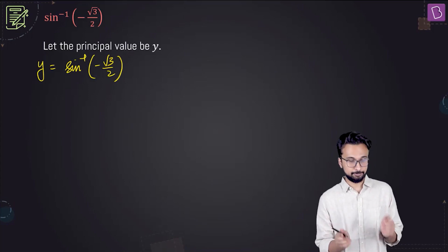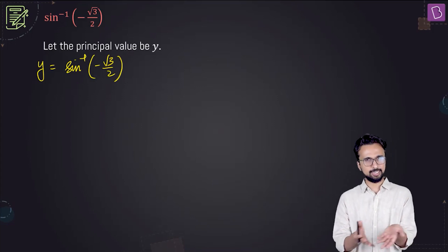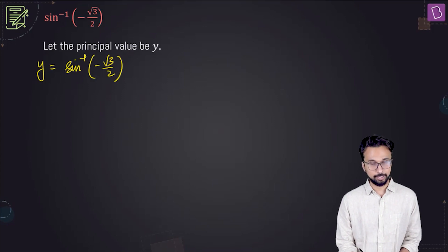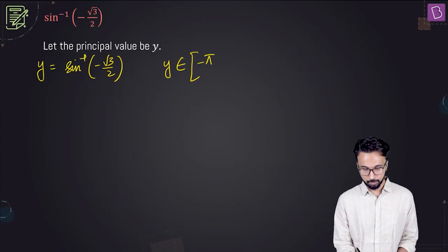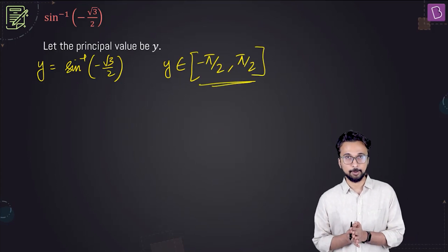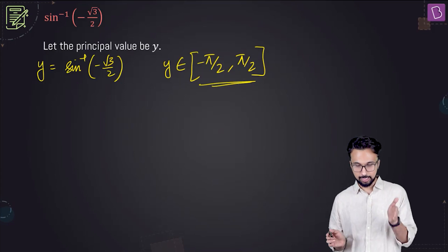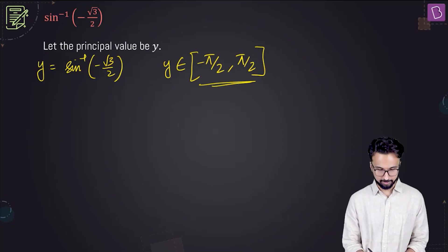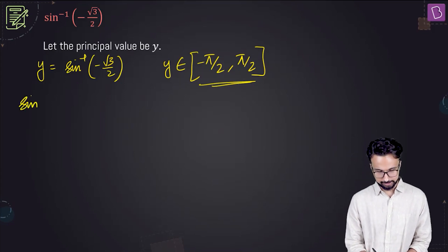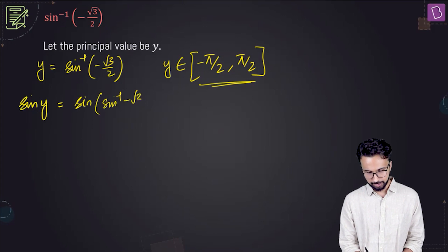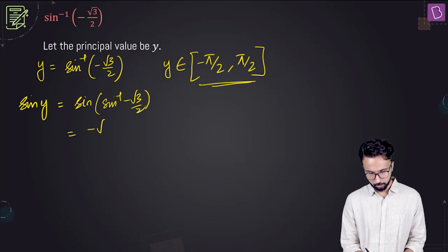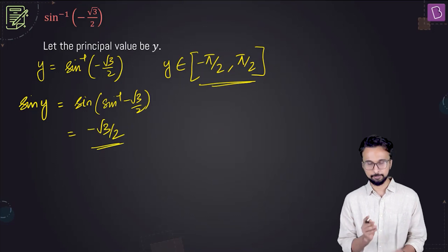Now, for the principal value, sine inverse of minus root 3 by 2 will be between minus pi by 2 and plus pi by 2 — this is where the principal values lie. Taking sine on both sides: sine of y equals sine of sine inverse of minus root 3 by 2, which comes out to minus root 3 by 2.